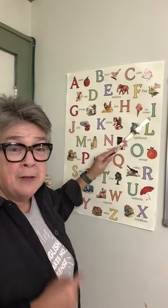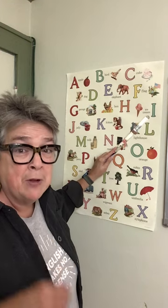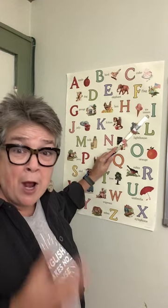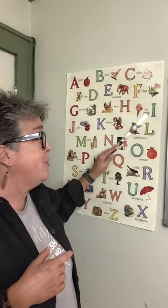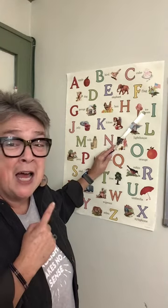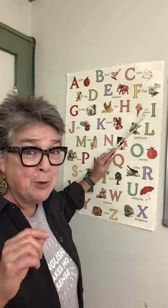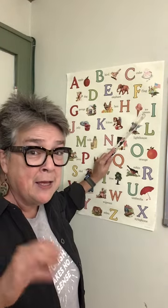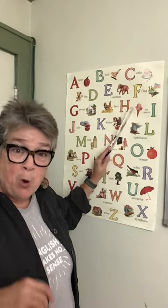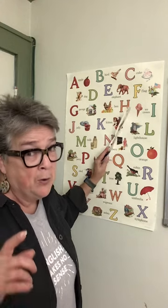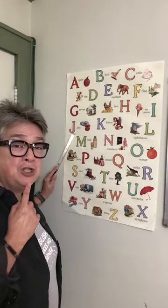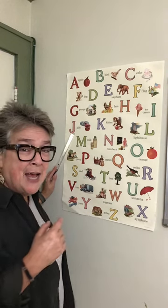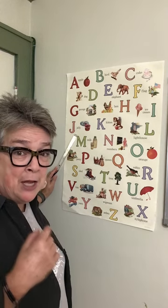I makes the I sound — I am so happy to be here! The long I as in ice cream, or the short I as in igloo, or it, or is. Then J, as in jelly or jam. Which is which?